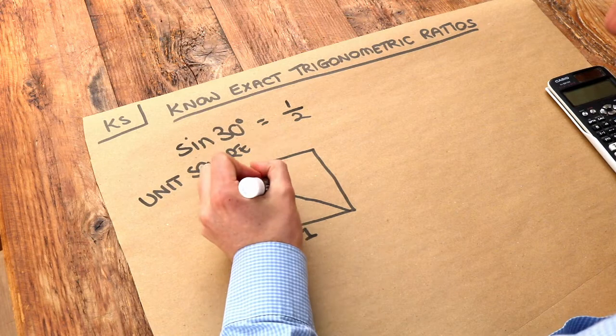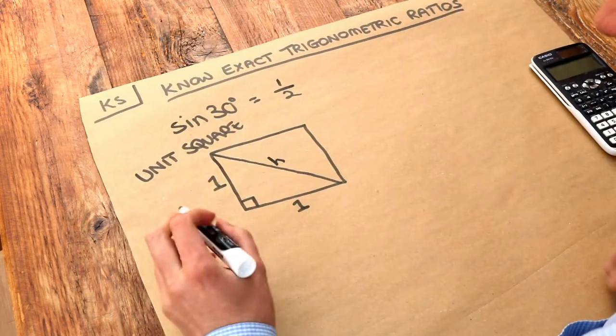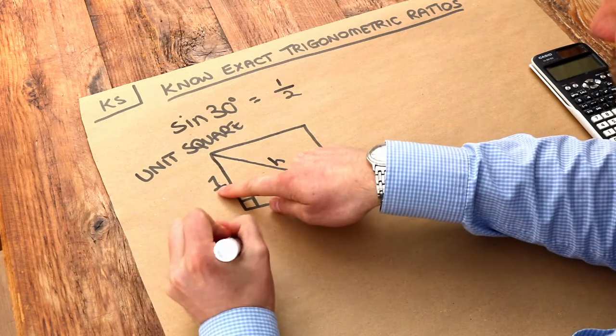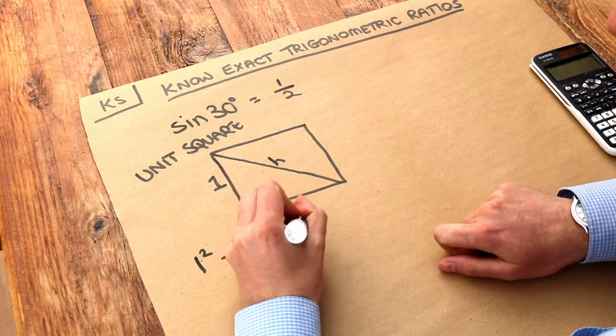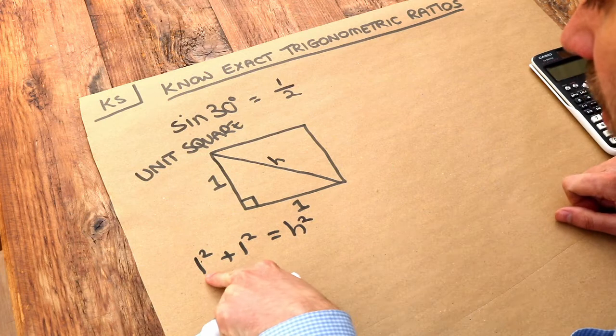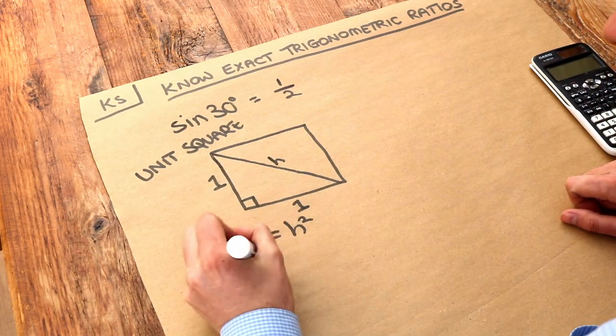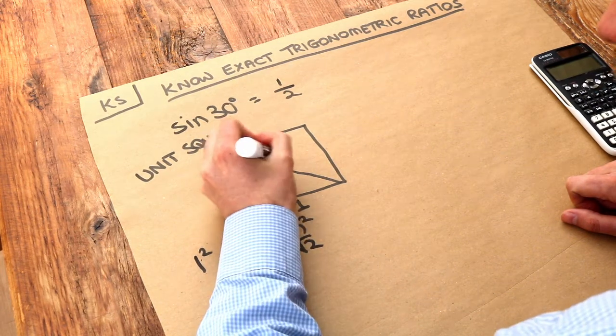What would be that diagonal of this unit square? Well we can use Pythagoras, if we make that h, then using Pythagoras we have 1² + 1² = h², so h is the square root of 2.